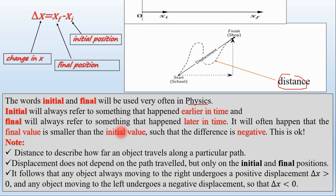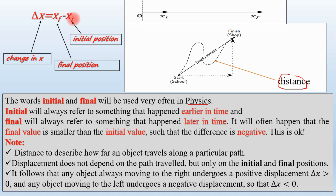The difference is delta x equal to x-final minus x-initial. The final value is smaller than the initial value when the object moves in the negative direction.